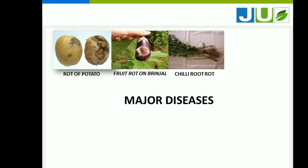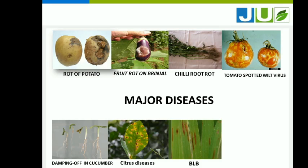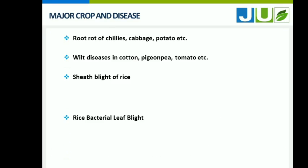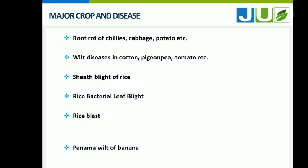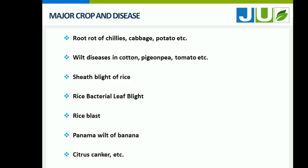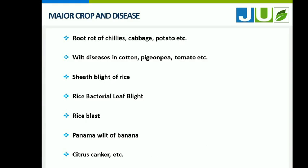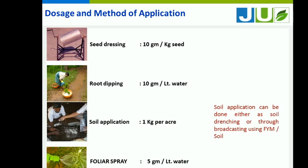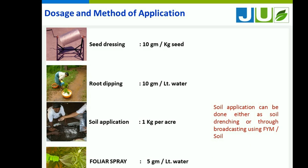Major diseases controlled include rot, wilt, damping off, BLB, white mold disease, etc. For dosages and methods: soil application of 1 kg per acre is recommended. We can also use it for root dipping and seed dressing.